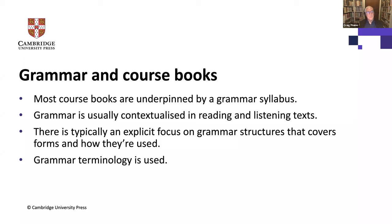In the course book, grammar is usually contextualized in reading or listening texts, which contain examples of the target grammar structure. Then there are exercises that focus on grammar explicitly — looking at how the grammar point is formed and how it's used. Course books also use grammar terminology such as parts of speech — noun, verb, auxiliary verb, adjective — and tense names like present perfect, past continuous, and future simple. Typically, course books will use that grammar terminology throughout.